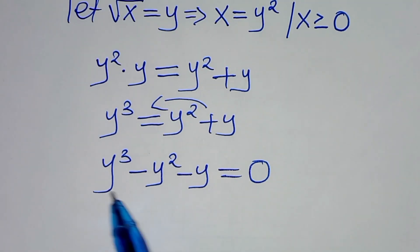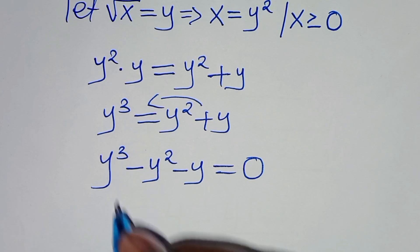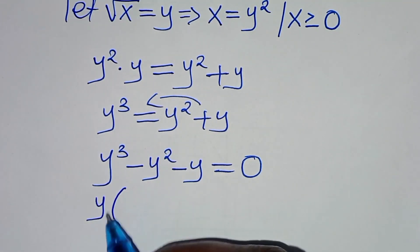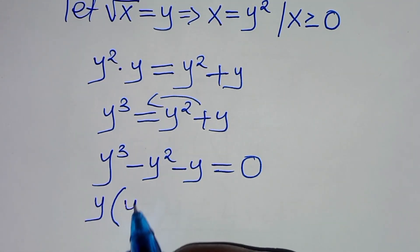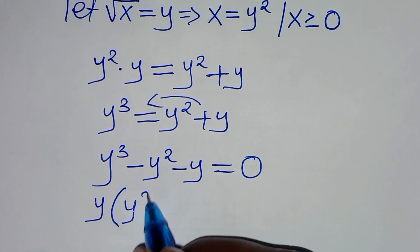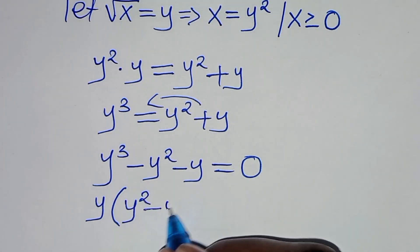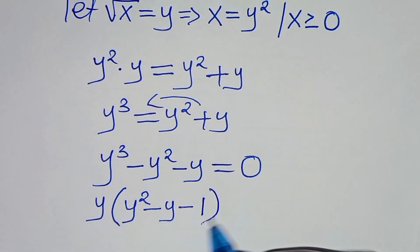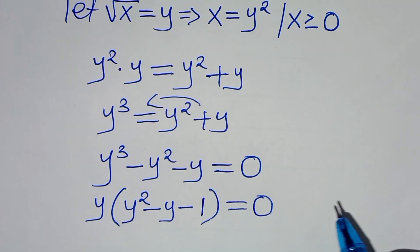This is equal to 0. So the next step is to factor out y — y is common here. So we can factor out y, so that we have y times the parenthesis y squared minus y minus 1. This is equal to 0.